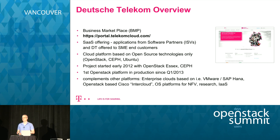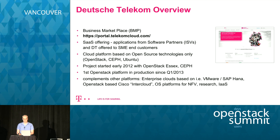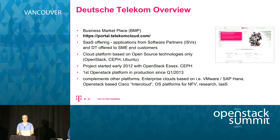The cloud platform below the Business Marketplace is based on open source technologies only — we use OpenStack, Ceph, and Ubuntu Linux. The project to set up this platform started in 2012 and we were able to bring it into production by Q1 2013. This is the first OpenStack production system of Deutsche Telekom, but it complements other platforms DT has — for example, huge enterprise platforms based on VMware, SAP HANA (we run a 2.9 million user SAP HANA platform). It also complements other OpenStack platforms in setup or already running, such as a Cisco InterCloud, OpenStack-based platforms for research, internal IaaS offerings, and an NFV platform.